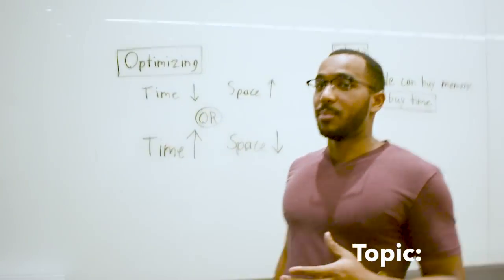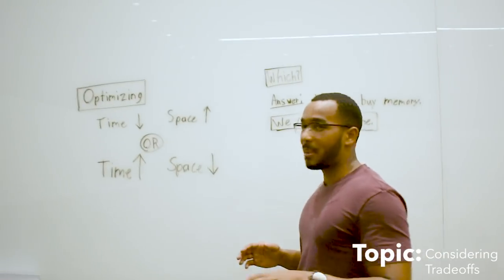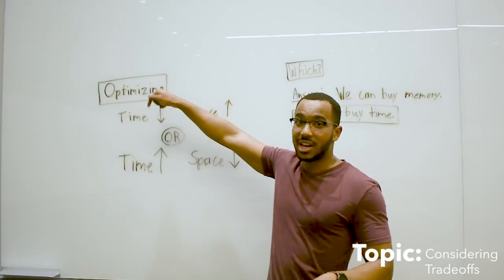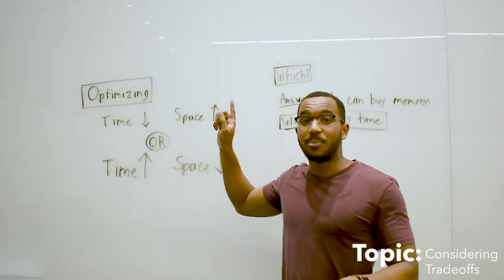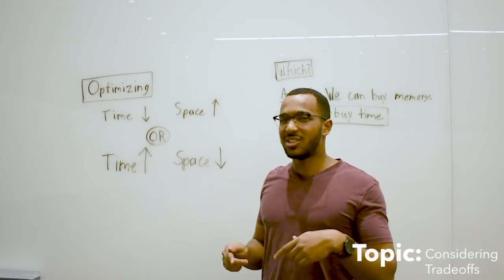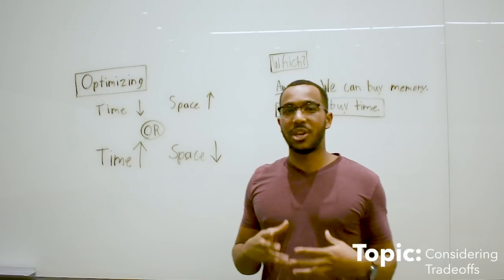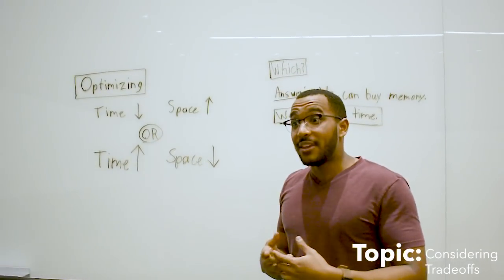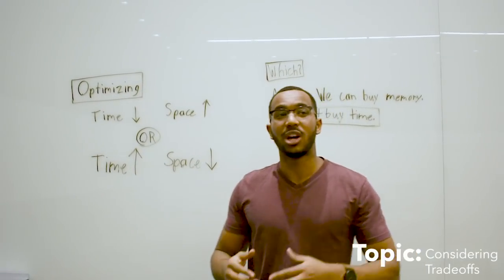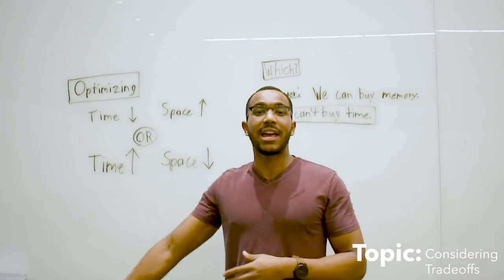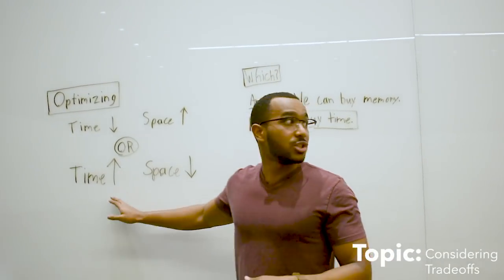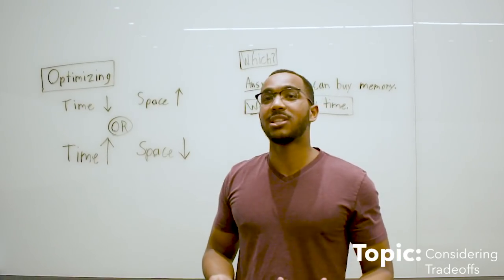Whenever we're optimizing solutions like this, normally a pattern you'll see is you can lower the time complexity and up the space complexity. You can store more space and meta information about your problem.